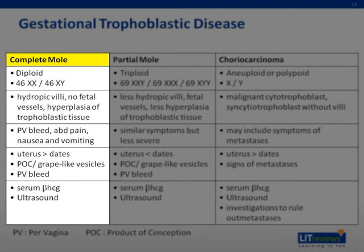A complete hydatidiform mole is diploid with a karyotype of 46XX or 46XY. Histology reveals hydropic villi with no fetal vessels and hyperplasia of trophoblastic tissue. The patient may present with pervaginal bleeding, abdominal pain, nausea, and vomiting. Examination findings may include a uterus larger than dates, grape-like vesicles at the introitus, and evidence of pervaginal bleeding. Investigations should include serum beta-HCG and an ultrasound scan of the pelvis.